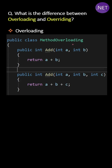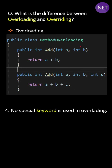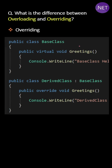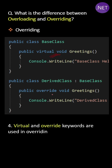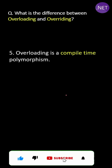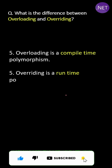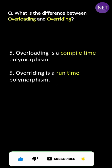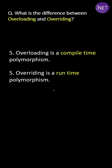In overloading, no special keyword is used. But in overriding, the virtual and override keywords are used. And the last difference is: overloading is compile-time polymorphism, whereas overriding is run-time polymorphism.